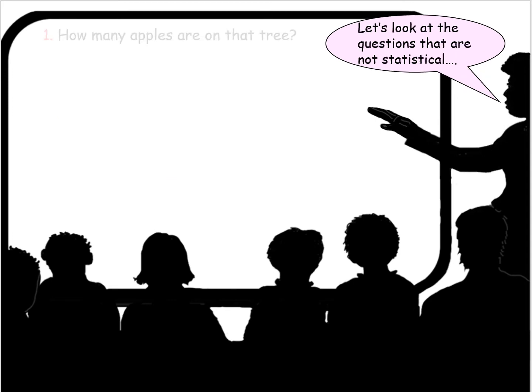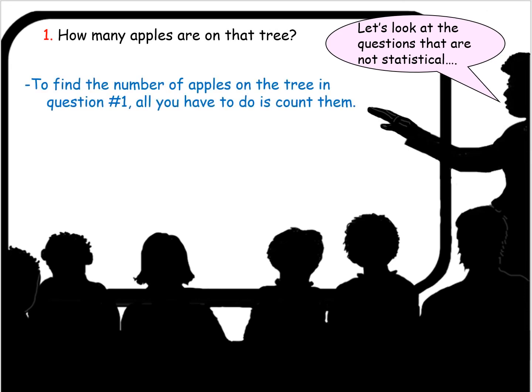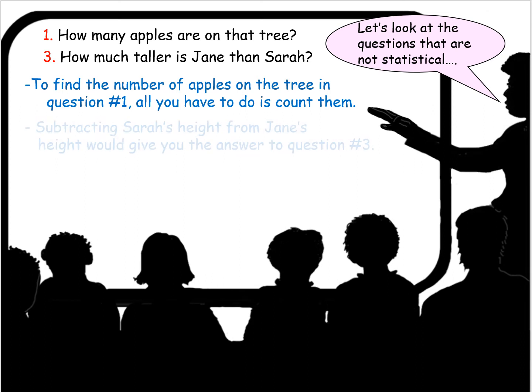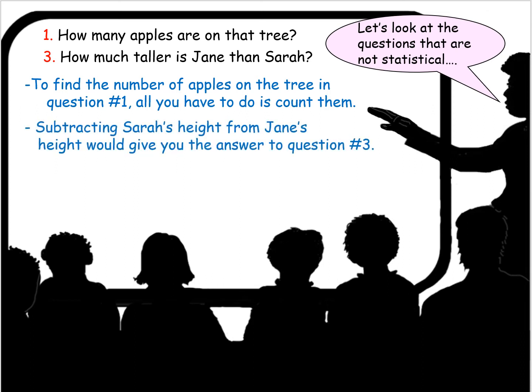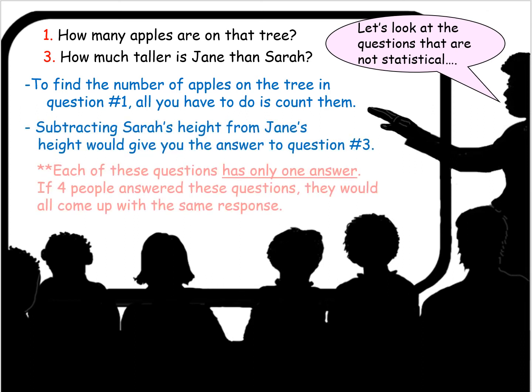Let's look at the questions that are not statistical. How many apples are on that tree? To find the number of apples on the tree in question one, all you have to do is count them — there is only one answer. How much taller is Jane than Sarah? Subtracting Sarah's height from Jane's height gives you the answer. Each of these questions has only one answer; if four people answered them, they would all come up with the same response.